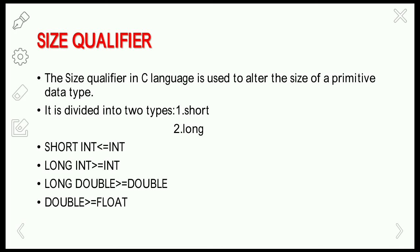The size qualifier in C is used to alter the size of a primitive data type. It is divided into two types: short and long. These are used as prefixes with basic data types to either increment or decrement the amount of storage space allocated to a variable. Normally an integer value is two bytes.